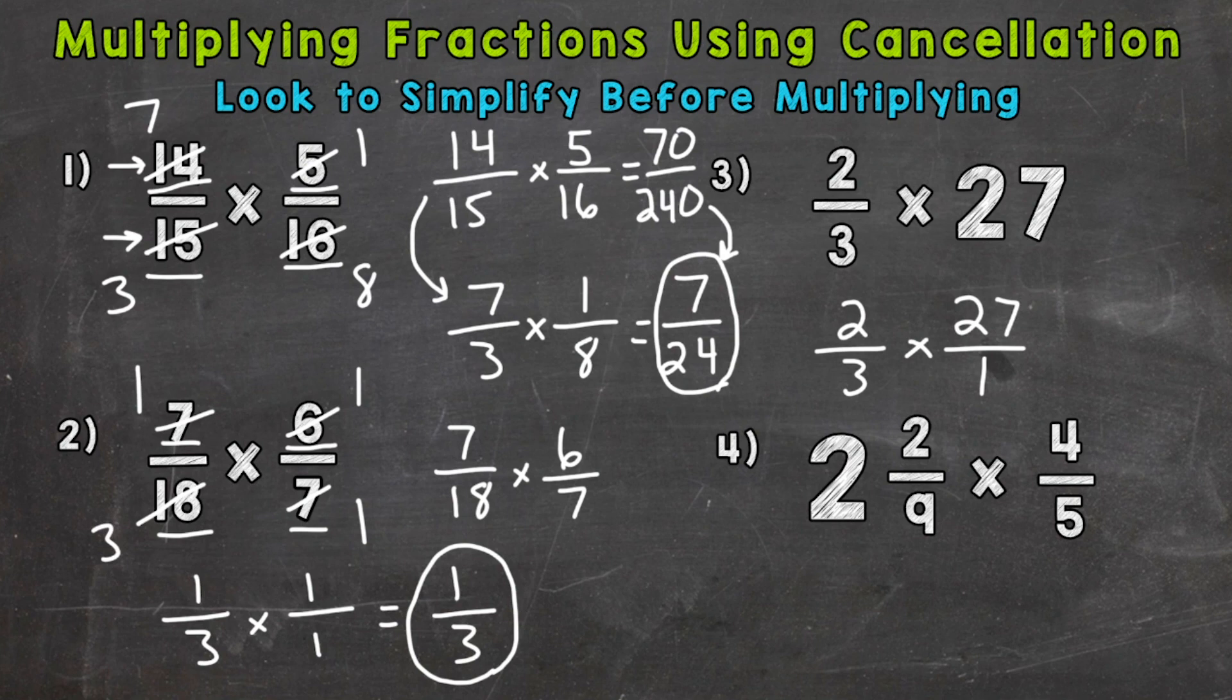And yes, we do. 3 and 27 both have a common factor of 3. So let's divide both by 3. 3 divided by 3 is 1. 27 divided by 3 is 9. So let's multiply straight across. 2 times 9 is 18. And 1 times 1 is 1. So we get 18 over 1, which is just 18.